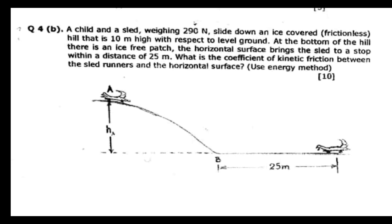Here they are asking about the friction between the sled and the horizontal surface. But from point A all the way to B it was frictionless, so we can find the velocity at point B using conservation of energy.